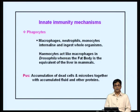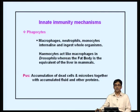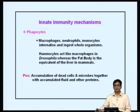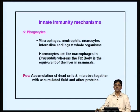Cellular mechanisms are also in place. The main cells involved are macrophages, neutrophils, and monocytes, which internalize and ingest microbes whole. The innate immune response is also present in lower organisms — in Drosophila, hemocytes act like macrophages, while the fat body acts as the equivalent of the liver in mammals. Pus, which often occurs at infection sites, is actually an accumulation of dead cells and microbes together, representing a way by which the response is being contained.